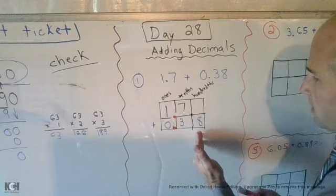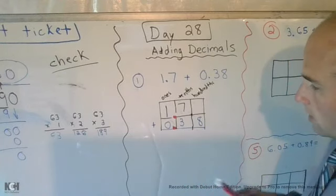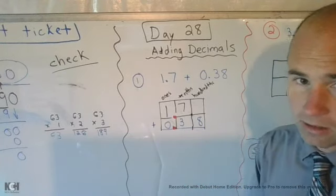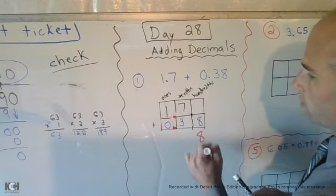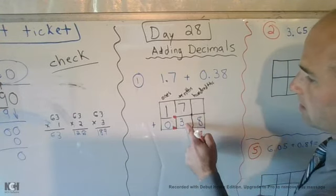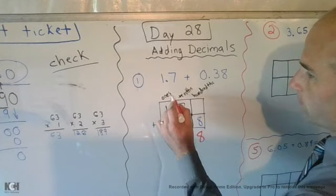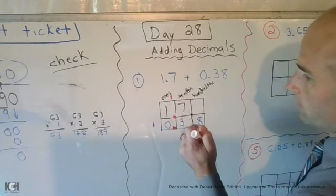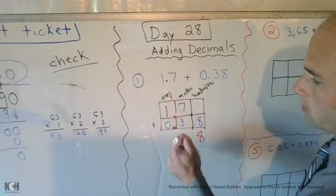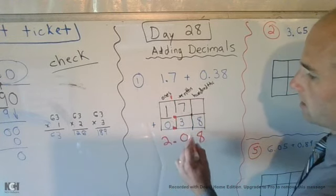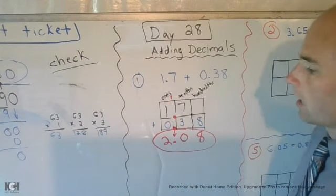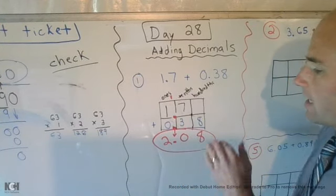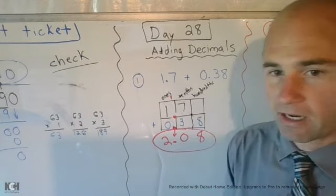Then you go from right to left, which is the opposite of reading, but when you're adding, you're going from right to left, and you add up your numbers. 7 plus 3 gives me 10, you're going to carry a 1 into the 1's place. 1 plus 1 plus 0 equals 2, which then gives me my answer of 2. Don't forget about that decimal. Bring it on down. And 8 hundredths. That is my final answer here.